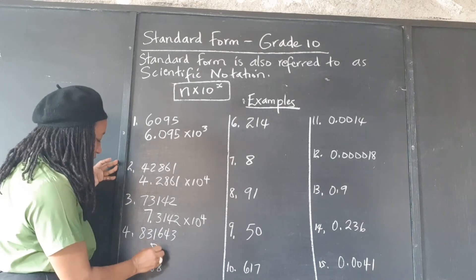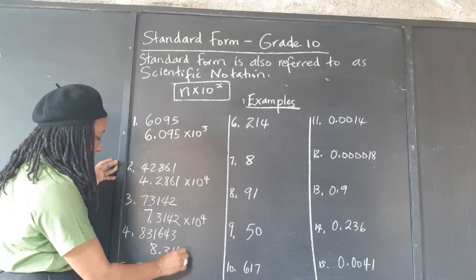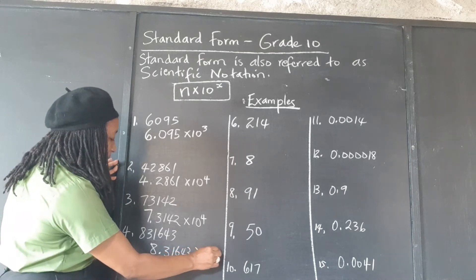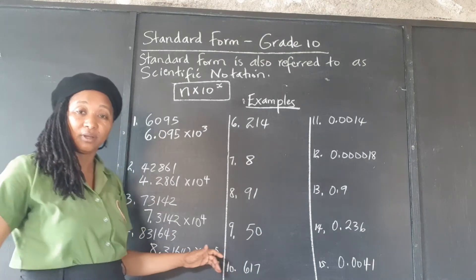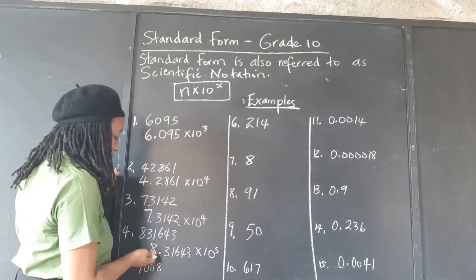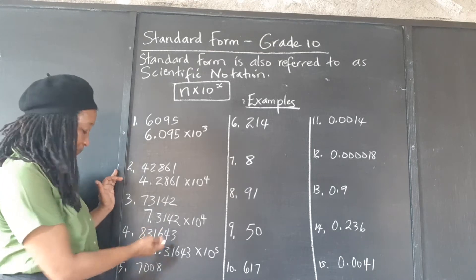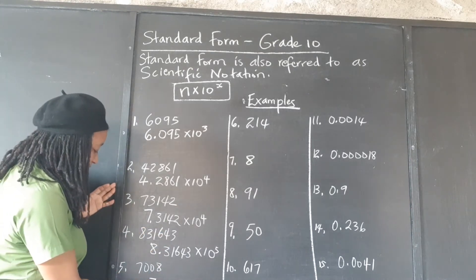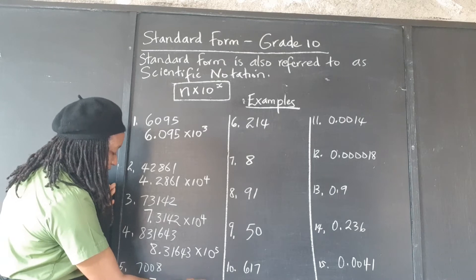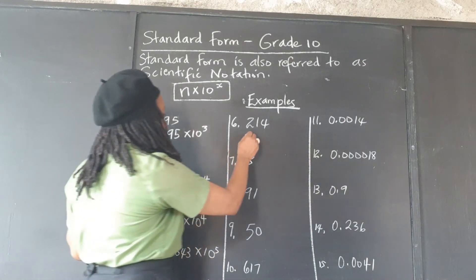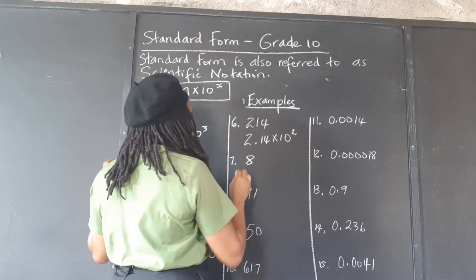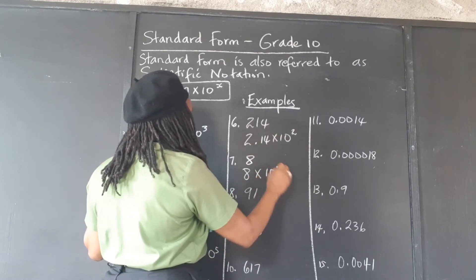831,643 — so we just need an 8, times 10 to the 1, 2, 3, 4, 5. If we multiply this by 10 to the fifth power, moving five places to the right, we will get back our original. So we have it in standard form and it's exactly the same value. 7,008 is 7.008 times 10 to the 1, 2, 3 — 10 to the third power. 2.14 times 10 to the second power.